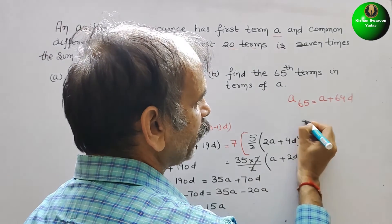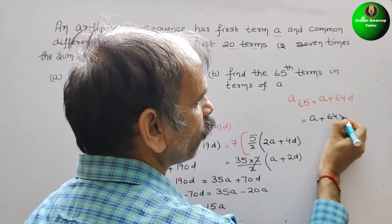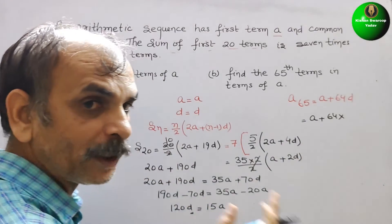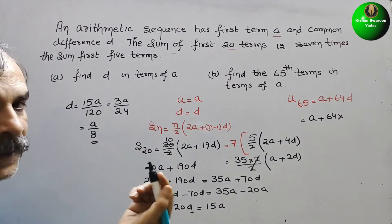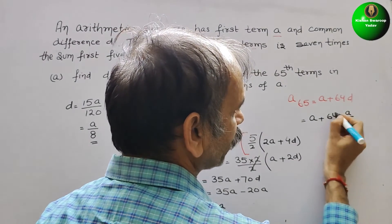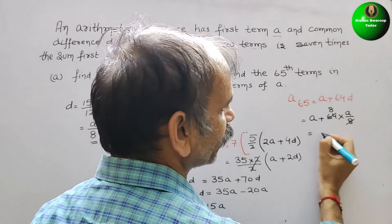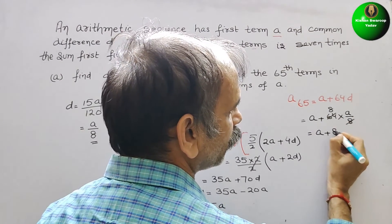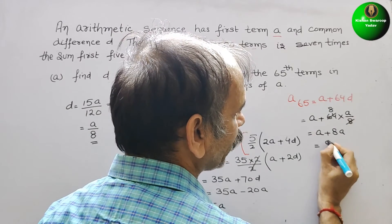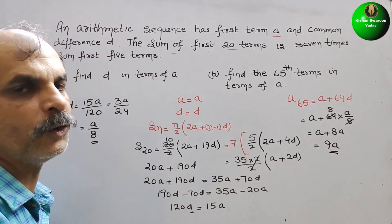Substitute the value here. So here it will be A plus 64 into D. What is D? D is A by 8. So now 8 and 64 cancel, so now we will get A plus 8A, that is equal to 9A.